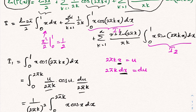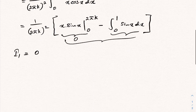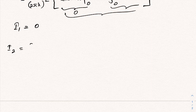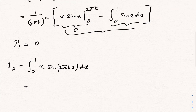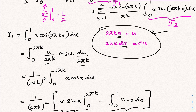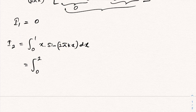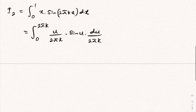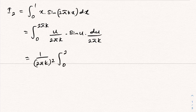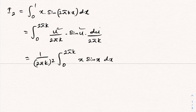Now for I2: the integral from 0 to 1 of x·sin(2πkx)dx. Using the same substitution u = 2πkx, with x = u/(2πk) and dx = du/(2πk), the limits become 0 to 2πk. So I2 equals 1/(2πk)² times the integral from 0 to 2πk of u·sin(u)du.